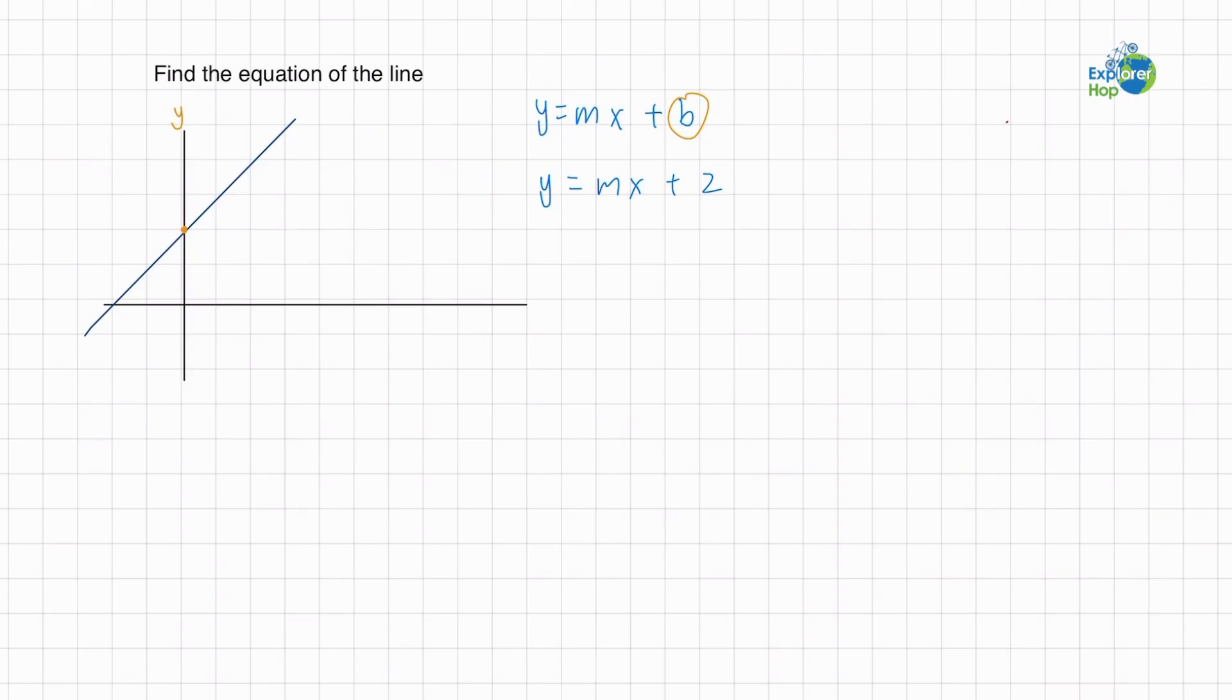Now let's look for m. As we recall, m is the slope. And the slope equals the change in y over the change in x.